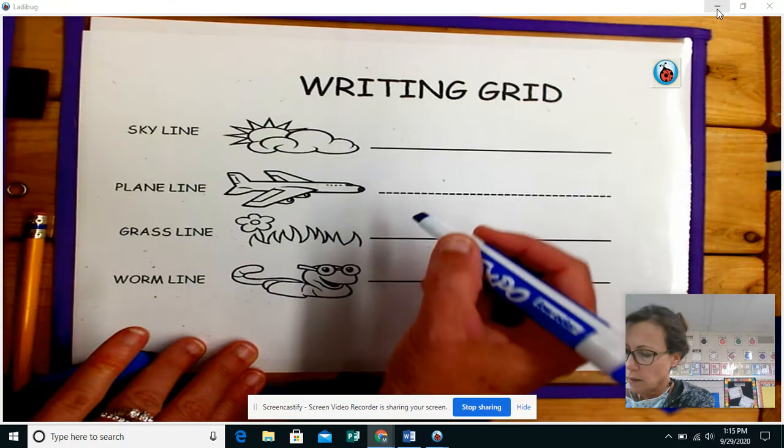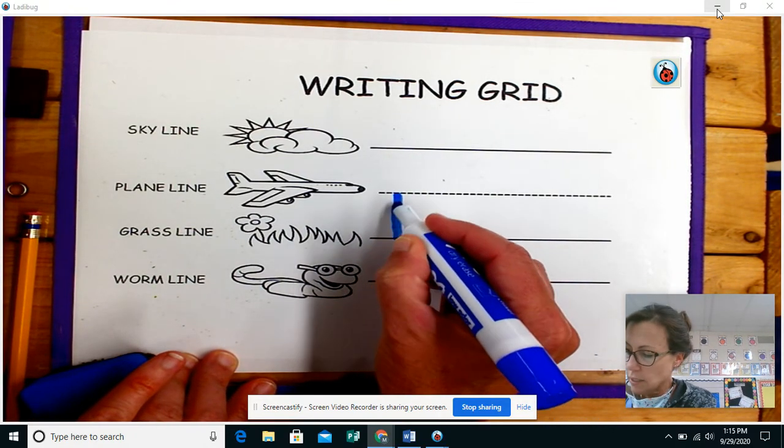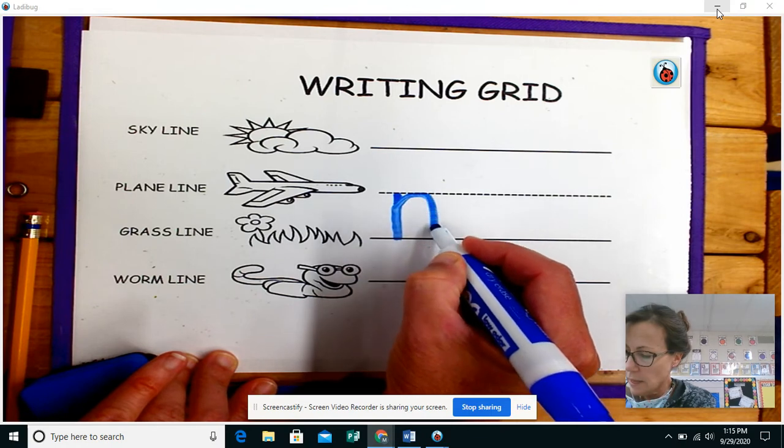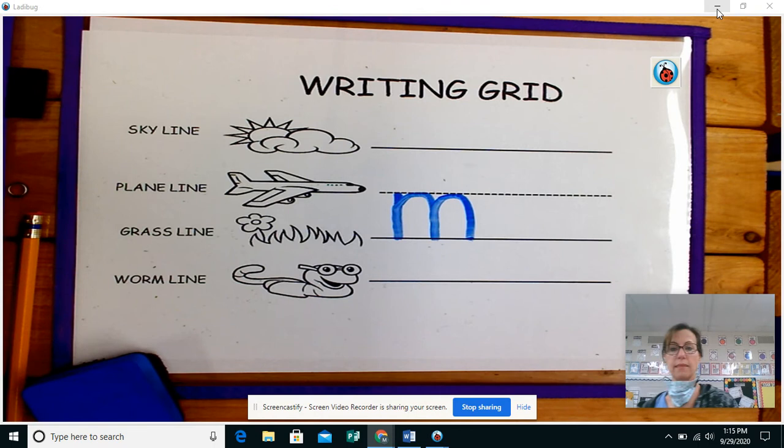Okay. Let's erase it one more time. You can say it with me. Start on the plane line, down to the grass line, trace up, touch the plane line back down, trace up, and back down. And that is how you write the lowercase m. And remember, you can say it with me, M, man, mmm. That's it. Good practicing, boys and girls.